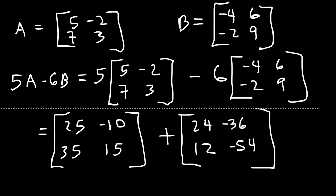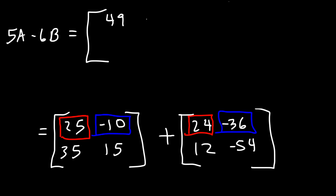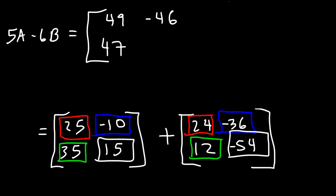So now, all we need to do is add the two matrices. And this will give us the value of 5A minus 6B. So let's add the elements in the first row and in the first column. 25 plus 24, that's 49. And then let's add the elements in the first row, second column. Negative 10 plus negative 36 is negative 46. Now, let's move on to second row, first column. 35 plus 12 is 47. And then finally, the second row, second column. 15 plus negative 54 is negative 39. And so, that's it for this problem.